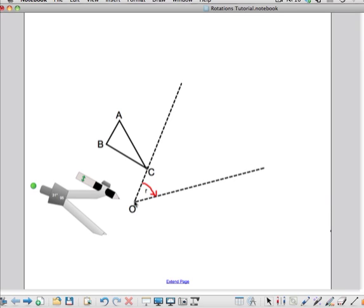Now, points that are closer to the center O will actually move a shorter distance than the points which are further away.